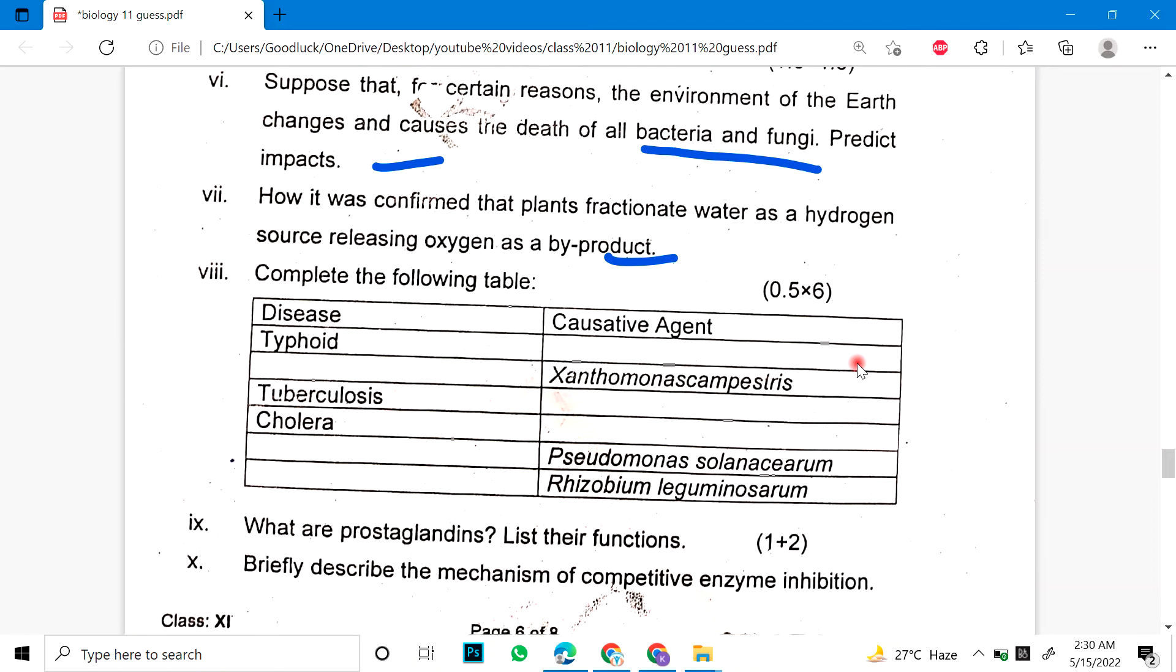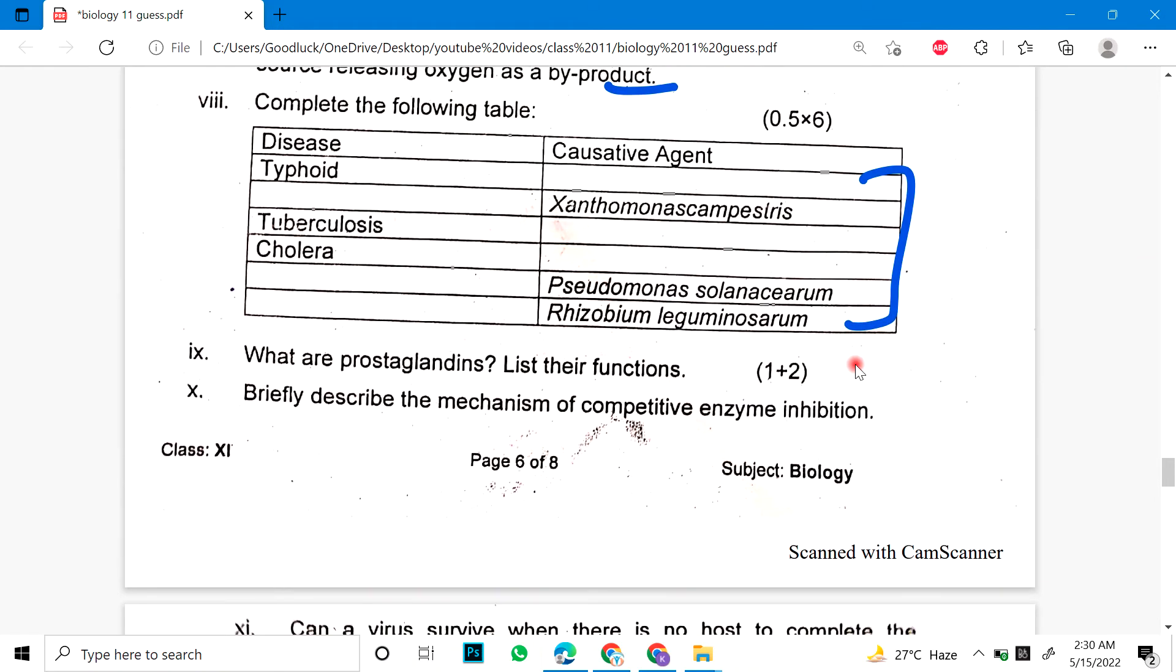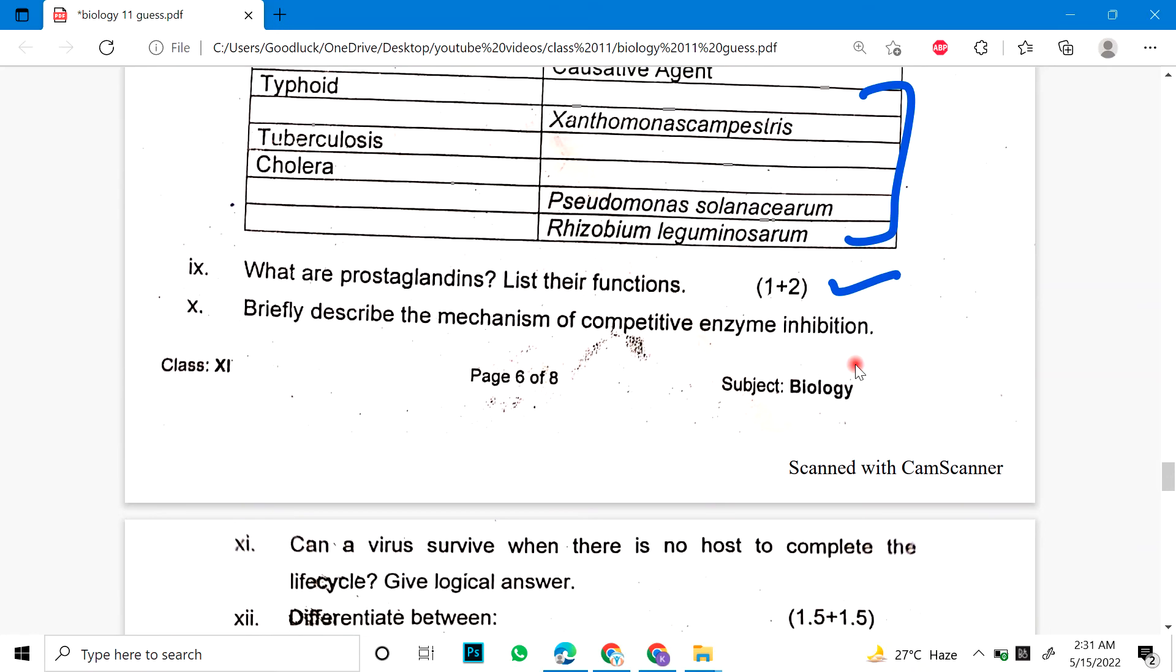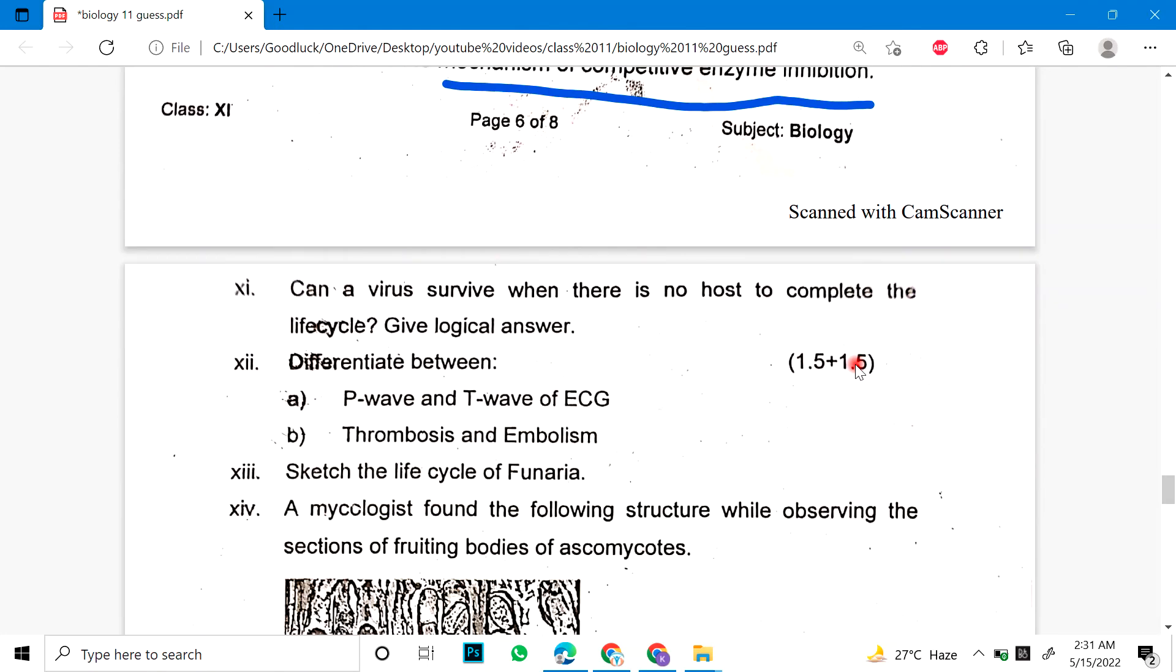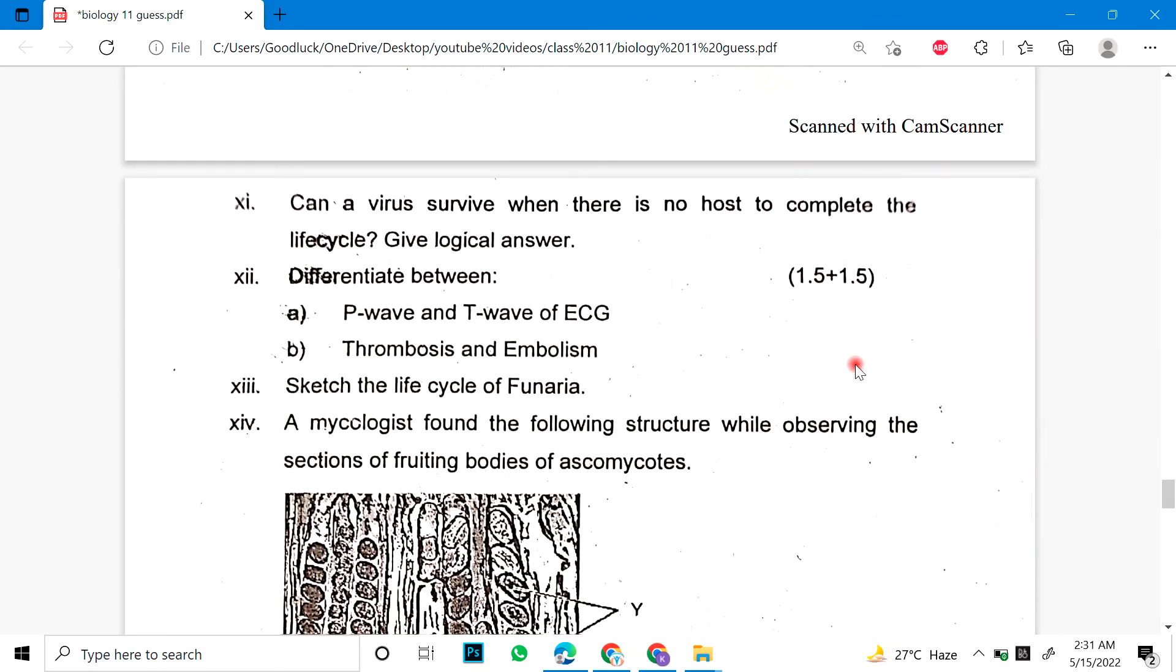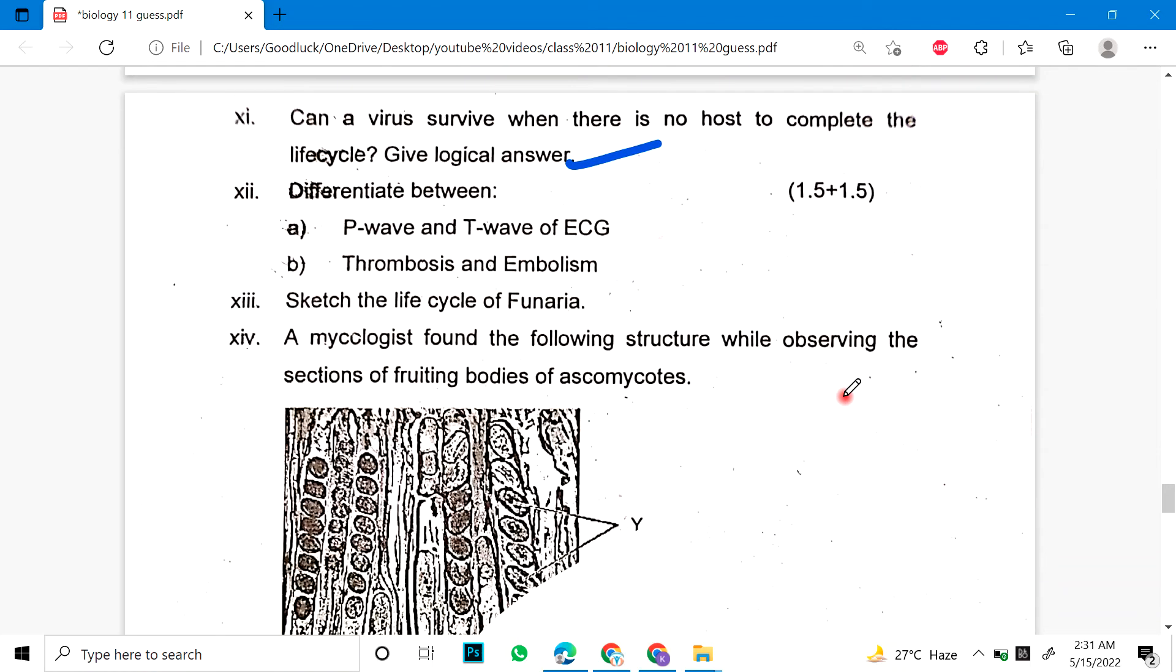Number 7: How it was confirmed that plants fractionate water as a hydrogen source releasing oxygen as a by-product? Eighth: Complete the following table. Ninth: What are prostaglandins? List their functions. Function is 2 marks and what are prostaglandins is 1 mark. Tenth: Briefly describe the mechanism of competitive enzyme inhibition. Eleventh: Can a virus survive when there is no host to complete the life cycle? Give logical answer.